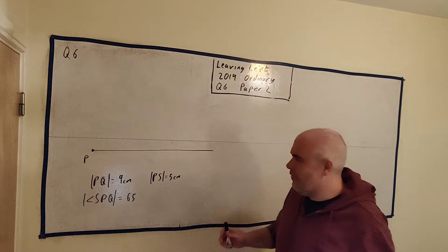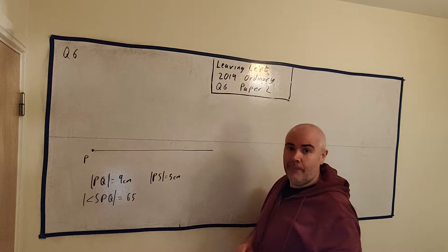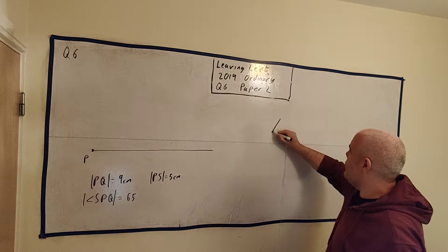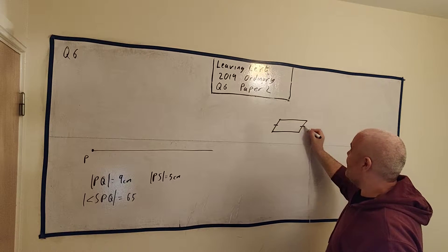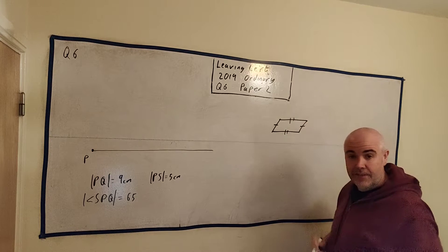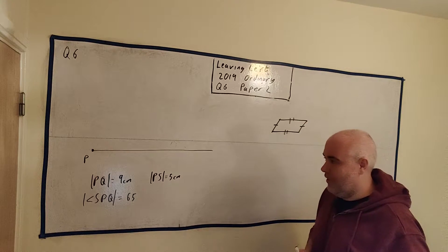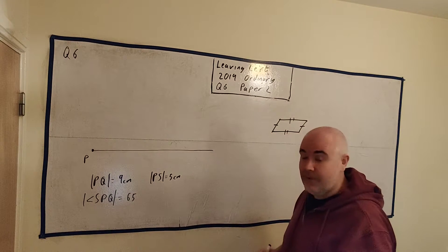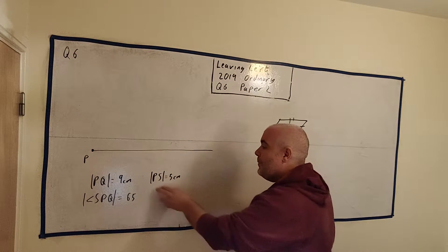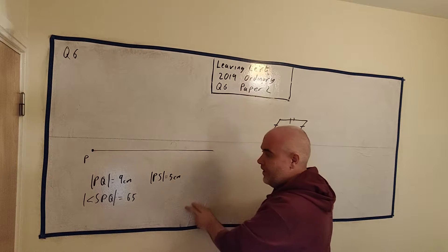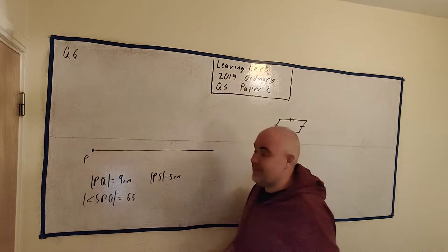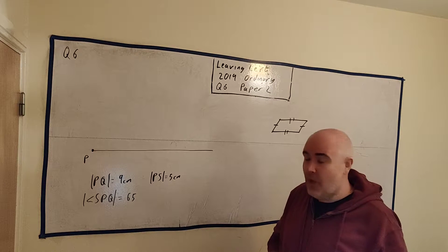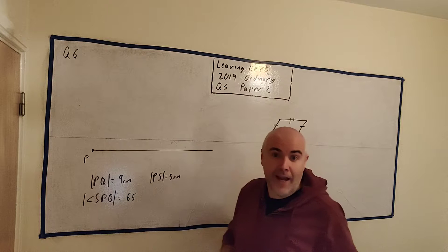They give you some bits of information. They tell you it's a parallelogram, so we need to know what that is. It's something that usually looks something like this, where this side is equal to this, and this side is equal to this side. It gives us lots of information here. PQ is equal to 9 centimeters, PS is equal to 5 centimeters, and angle SPQ is equal to 65. Now it doesn't tell us where any of these sides are. We're going to have to figure some of that out ourselves, or a better way to think of it is we can make up anywhere we want.